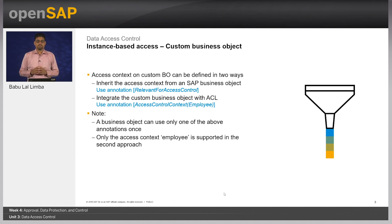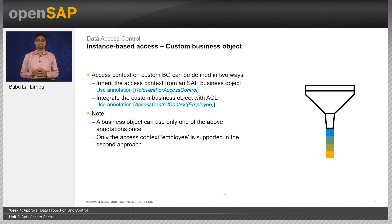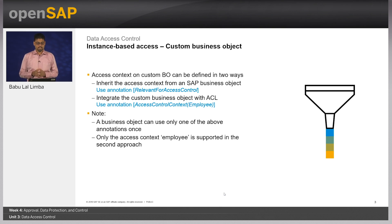The target business object must have an association that is relevant for access control. The second way to integrate the ACL is to integrate the custom business object within the BO itself. Here you must define an element in the business object which will store the access control data and pass it to the ACL. This approach is very simple and not much coding is required. The element should be annotated with access context — access control context — and within brackets you should provide the access context. The type of the element should be UUID, and the data of this element is passed to the ACL node, which will return the instances accordingly.